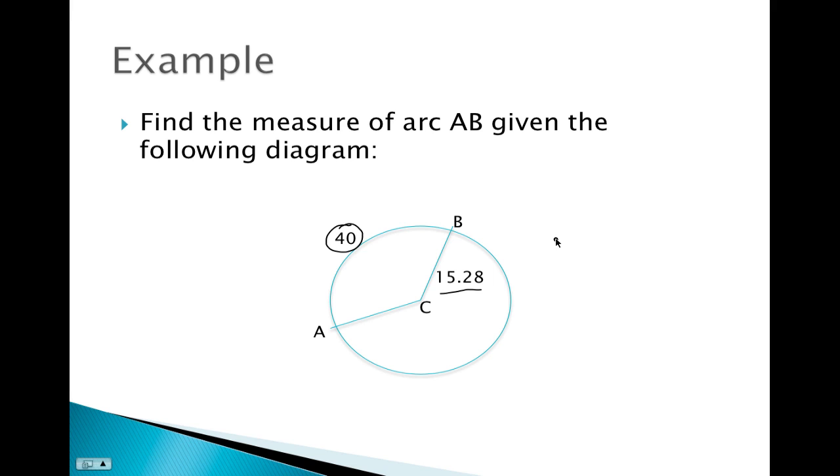So our arc length, which is 40, over our circumference, so that would be 2 pi times 15.28, will equal our measure of arc AB over 360 degrees. So when you plug that into your calculator, oops, I forgot to close my parentheses there,